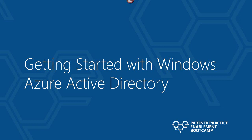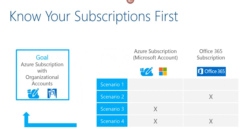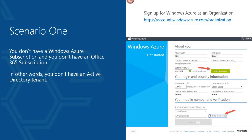Now that you know what Azure AD is and what it's capable of, let's talk about how you can get started. Generally, an organization using Windows Azure AD will want Azure subscriptions linked to that directory. This table illustrates scenarios for the two most common services — a Windows Azure subscription from a Microsoft account and an Office 365 subscription. You could have neither, either, or both. I'm going to go through each scenario and give guidance on how to achieve the goal: a Windows Azure subscription with your Windows Azure Active Directory.